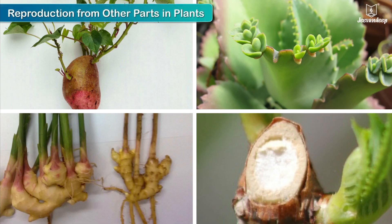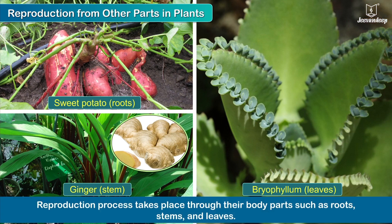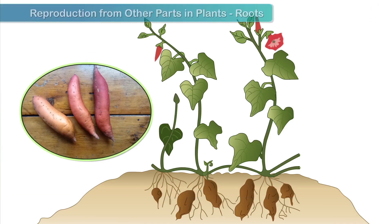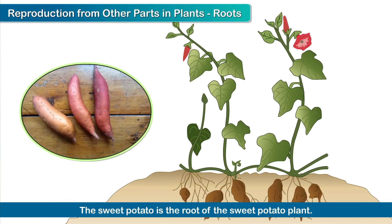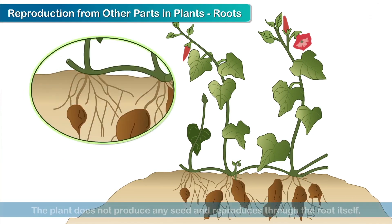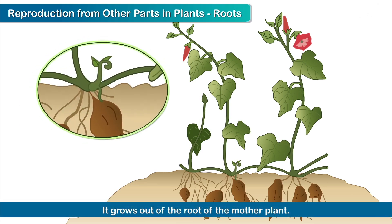Reproduction in plants from other parts of the plant. Not all plants reproduce through seeds. Their reproduction process takes place through their body parts such as roots, stems and leaves. Root: the sweet potato is actually the root of the sweet potato plant. The plant does not produce any seed and reproduces through the root itself. It grows out of the root of the mother plant.